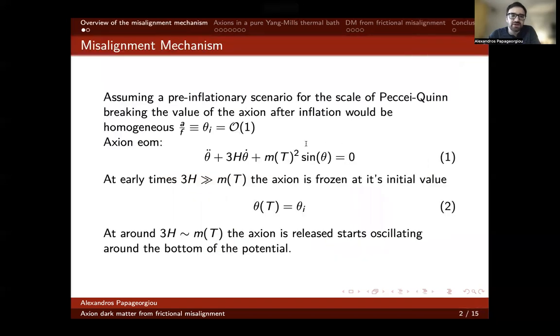A few words are in order about the traditional axion misalignment mechanism. We're assuming a pre-inflationary scenario for the scale of Peccei-Quinn symmetry breaking. Right after inflation, the axion acquires a homogeneous value. During radiation domination, the axion follows its equation of motion, which is equation number one. At early times, when the Hubble rate is very high, the Hubble friction dominates over the mass of the axion. When that happens, the axion is frozen at its initial value.